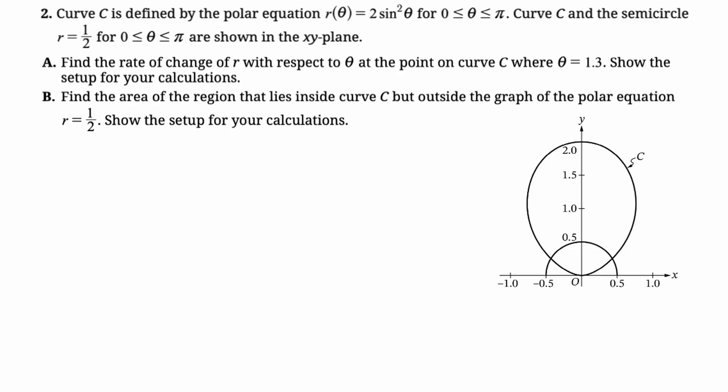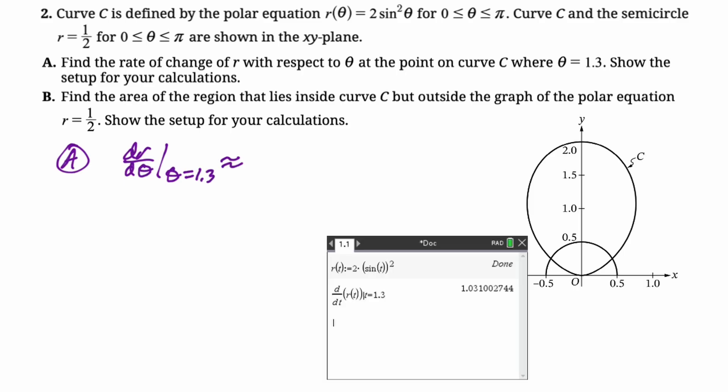Part A: find the rate of change of r with respect to theta at the point on the curve C where theta equals 1.3. Show the setup for your calculations. I don't know, this one seems pretty straightforward. So we're looking for dr/dθ. This is a calculator problem, so we're just going to plug in 1.3. I defined r of t. I usually use t instead of theta because it's just easier. Then I found the derivative at 1.3. So I'm going to write down 1.031 and I'm pretty sure that's what they're asking for.